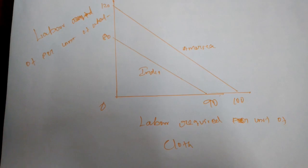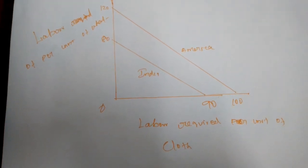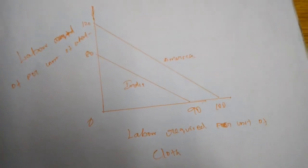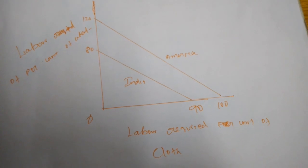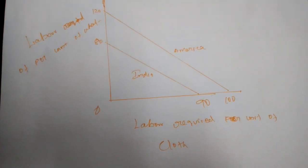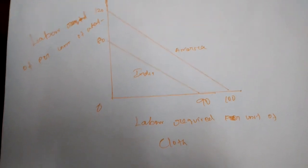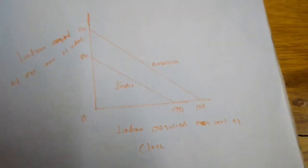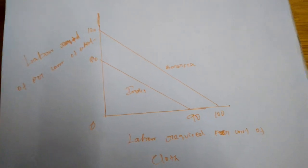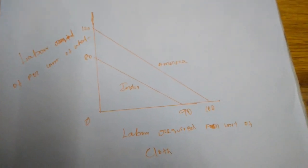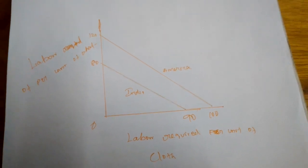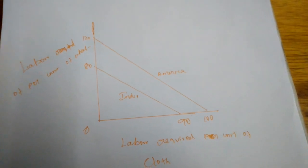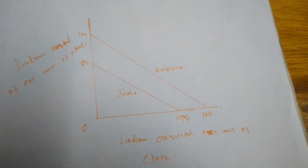There are two criticisms of this theory. First, labor cost is only a small portion of total cost, so a theory based only on labor cost is unrealistic because more factors of production must be used. Second, laborers in different countries are not equal in efficiency — some nations may have more efficient workers than others, so efficiency always differs between nations. If you have any doubts please ask. Tomorrow we will go to the next concept. Thank you.